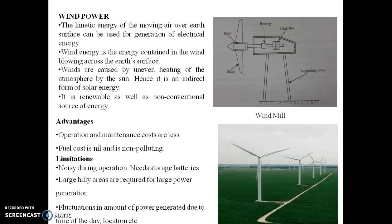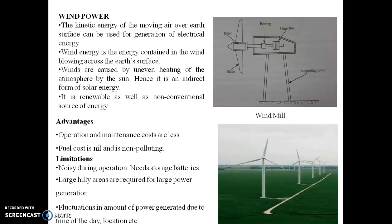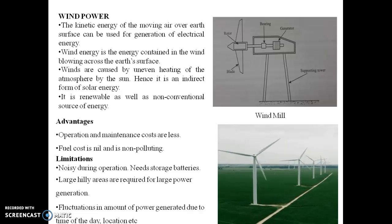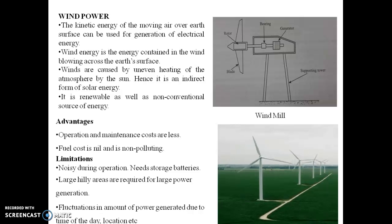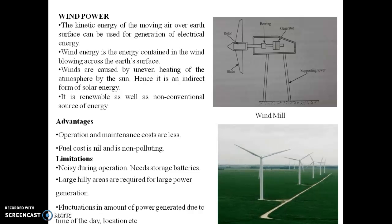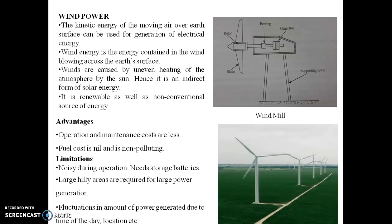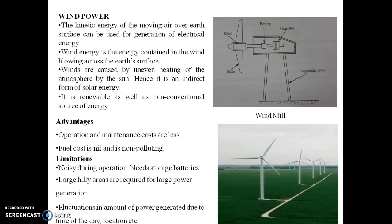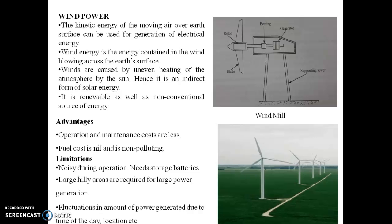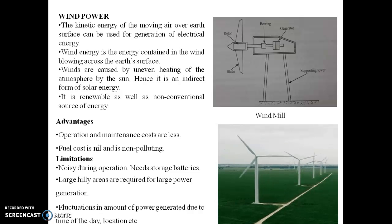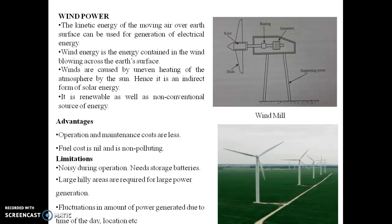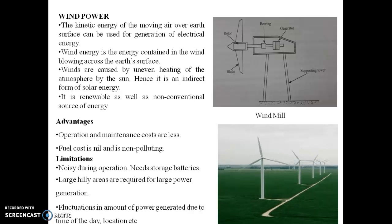Large land areas are required for large-scale power generation, and windmills cannot be planned for all locations. There are also fluctuations in the amount of power generated due to time of day and location. Power generation completely depends on wind speed, whether it is 40, 60, or 10 km/h, causing variations in output.